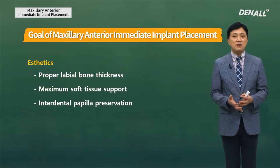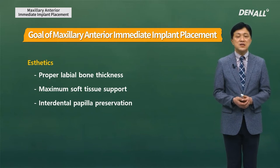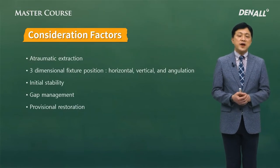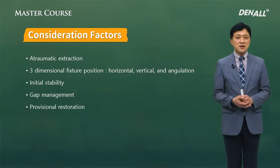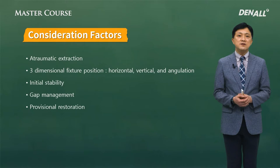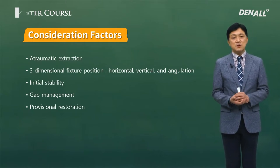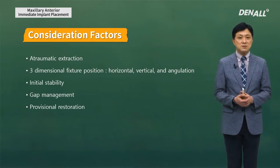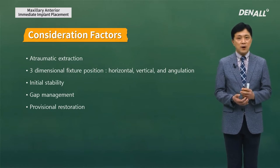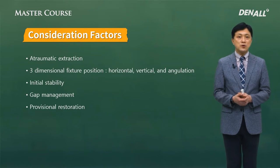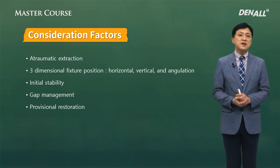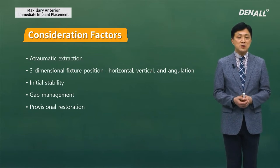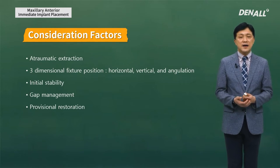For maxillary anterior immediate implant placement, we need to consider all these factors before placing an implant. The factors to consider are as follows: extraction should be as atraumatic as possible; three-dimensional implant positioning is very important in terms of horizontal, vertical, and angulation; how to achieve primary or initial stability should be considered; how to manage the gap created after implant placement should be considered; and finally, how to provide provisional restoration to the patient.